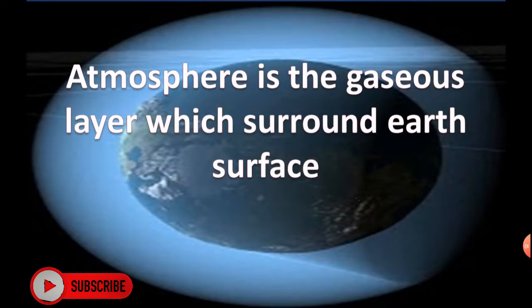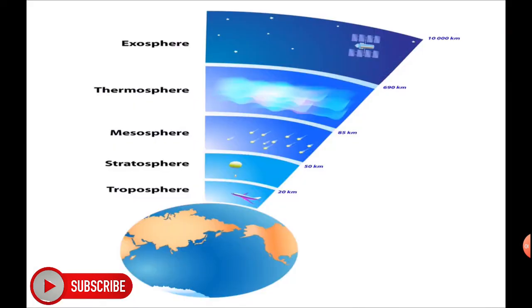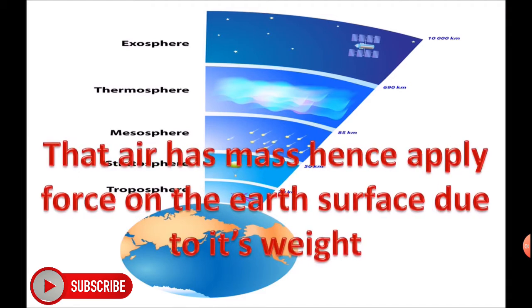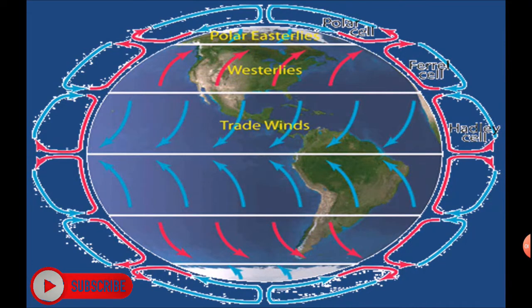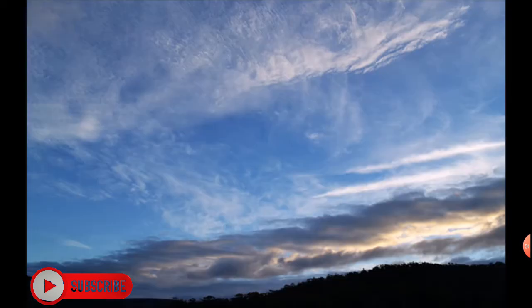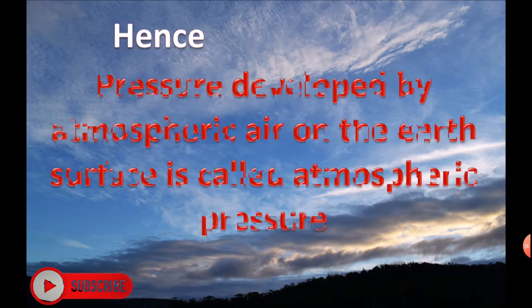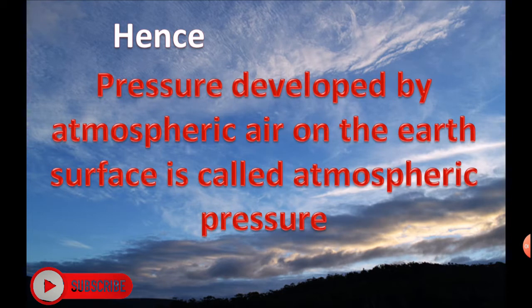Atmospheric Pressure. The atmosphere is the gaseous layer which surrounds the Earth's surface. That air has a mass, hence it applies force on the Earth's surface due to its weight. The pressure developed by atmospheric air on the Earth's surface is called atmospheric pressure.